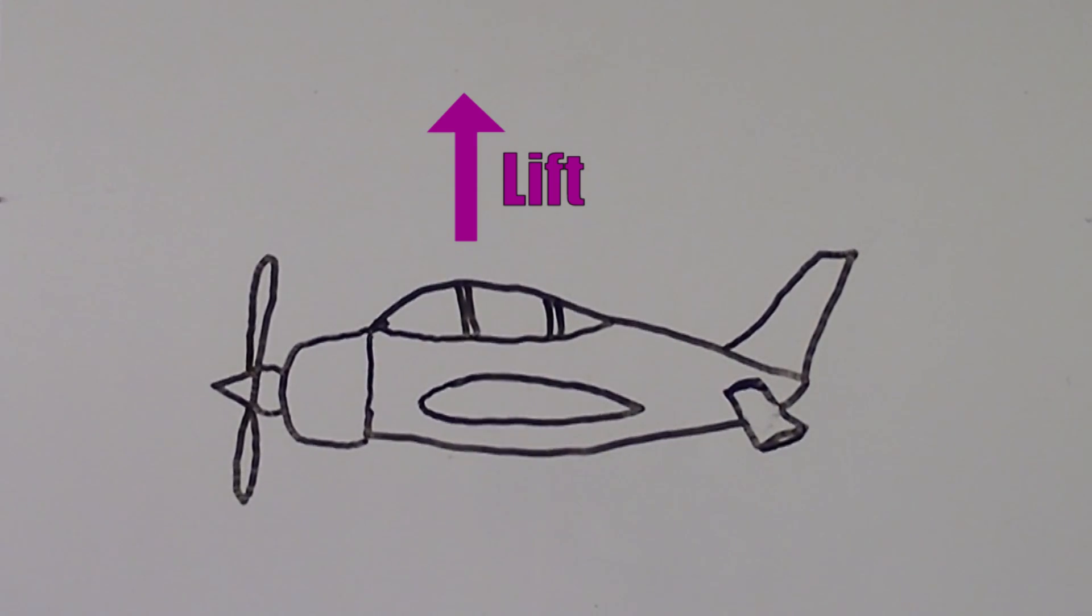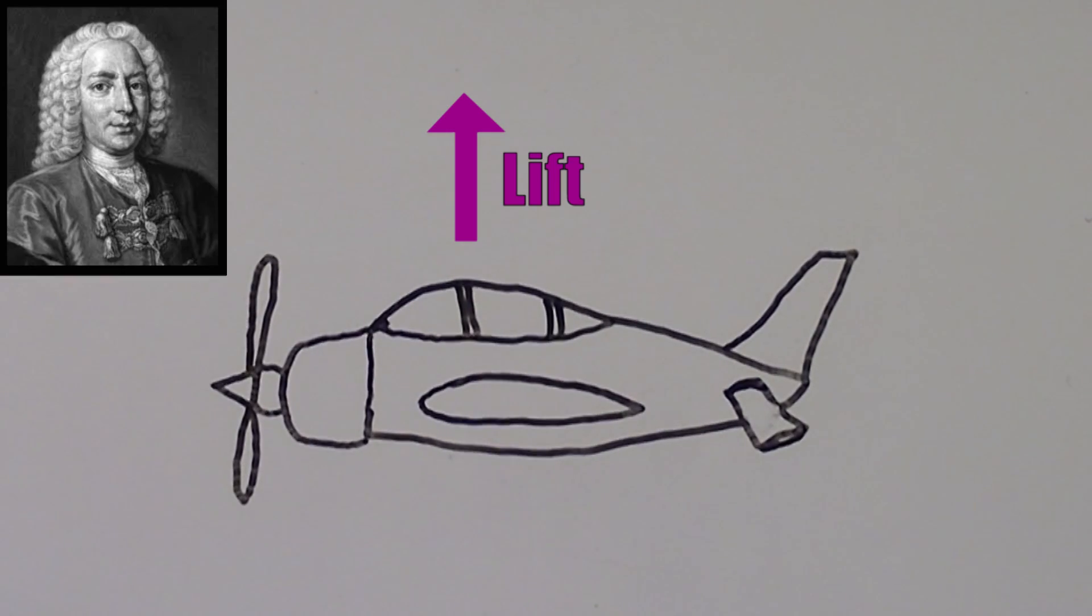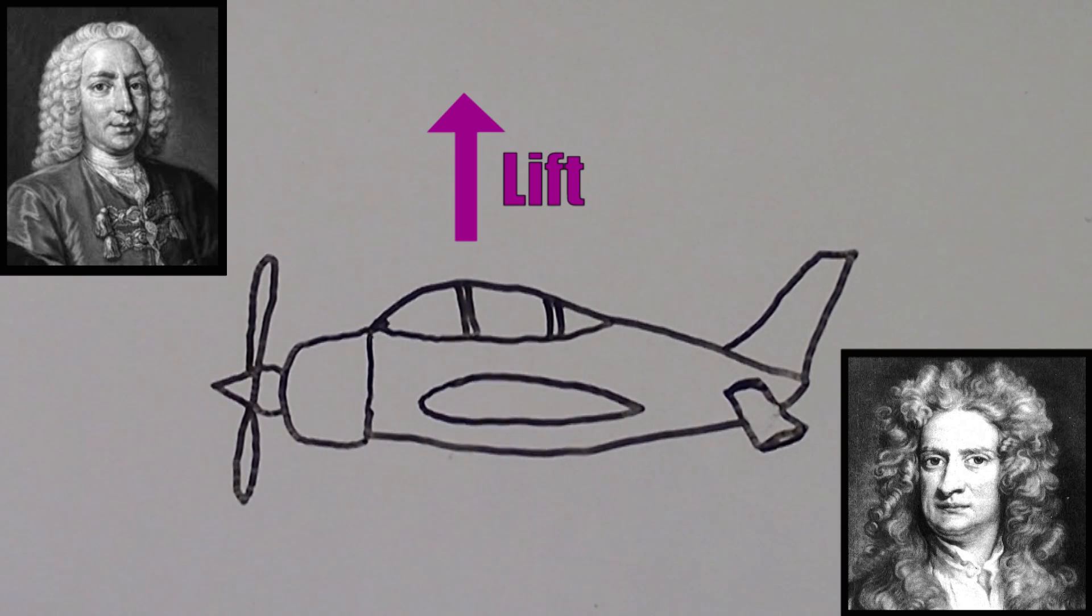To understand this debate, we need to first familiarize ourselves with two of history's greatest scientists, Daniel Bernoulli and Sir Isaac Newton. Besides having two of the greatest wigs that science has ever seen, each of these men made key discoveries that provided fuel for aeronautic debates for centuries to come.